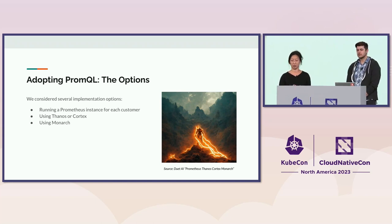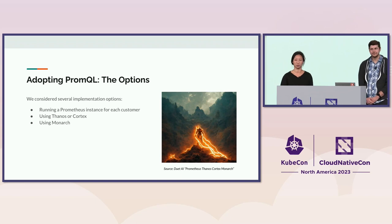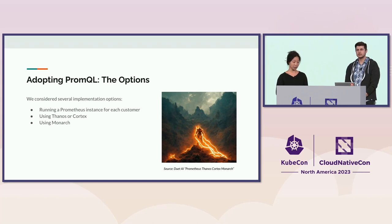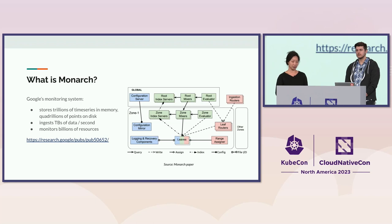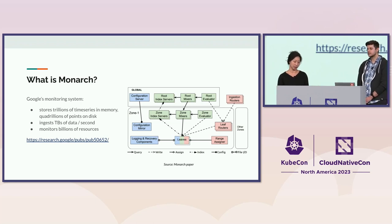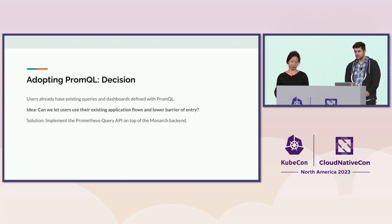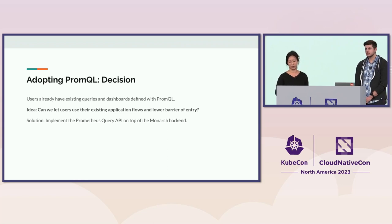We also considered running another open source system like Thanos or Cortex, but for all of these we would basically need per-customer deployments, which would be difficult to operate and resource-intensive. Finally, we considered using Monarch — the issue being that Monarch doesn't actually expose the Prometheus API. Monarch is Google's centralized monitoring system: a distributed, multi-tenant storage system already used by many teams internally. Google SREs have lots of experience operating it. We chose Monarch as the data store, so the problem to solve was: how do we implement the Prometheus query API over Monarch?